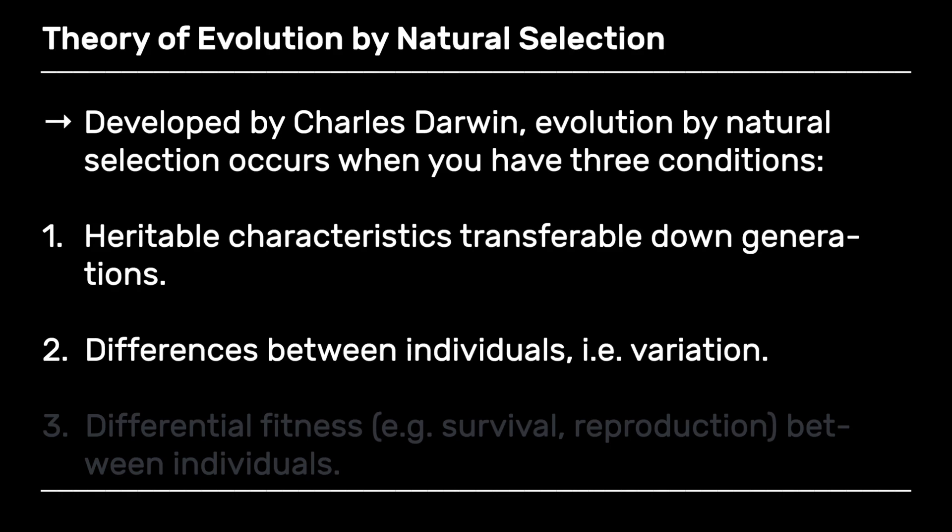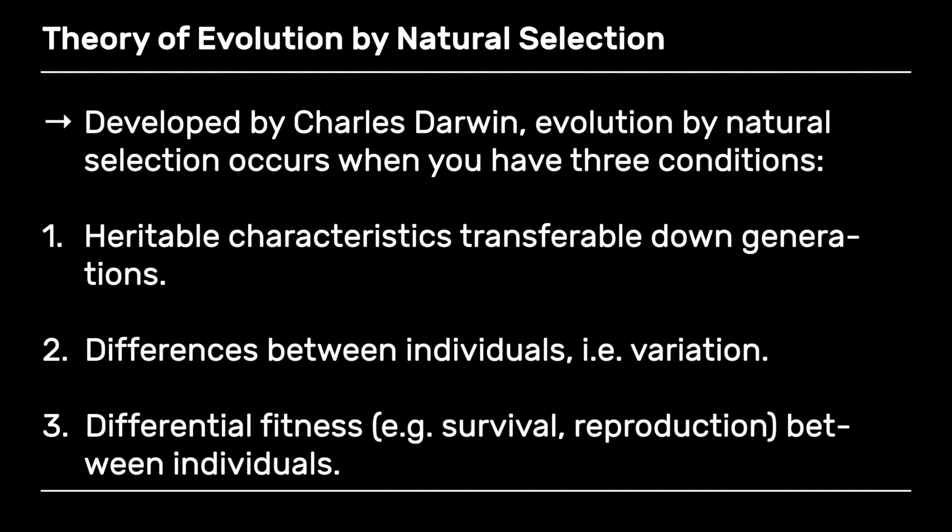If you have a heritable character that is different between individuals and which leads to what's called differential fitness — fitness can be seen as survival, the ability to reproduce — if individuals with those different characters have different survival or different abilities to reproduce, then you get a change in the genetic frequencies from one generation to another. And that is all evolution is. Evolution is a change in gene frequencies, and natural selection is this sifting of characters because they're associated with increased survival or ability to reproduce, and that over the vast depths of geological time produces changes and produces all the astonishing world we have around us.